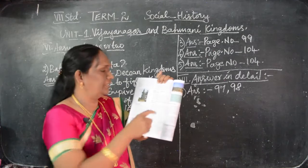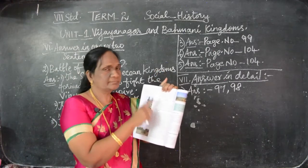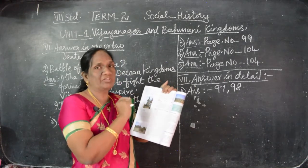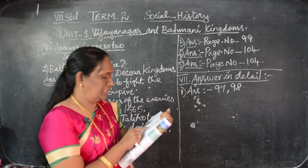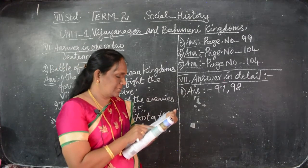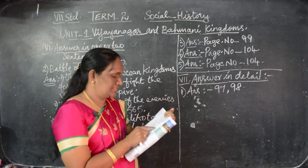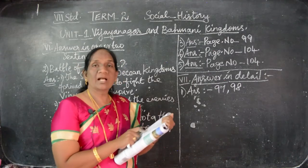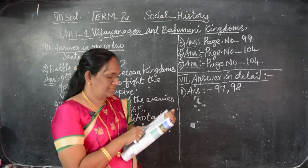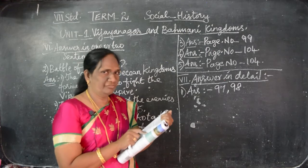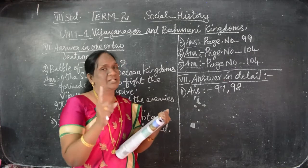Then the next side heading — Patron of Literature, Art and Architecture. You have to underline the side heading. Krishnadevaraya patronized art and literature. Eight eminent luminaries in literature, known as Ashtadiggajas, adorned his court. Till that you have to write. Can you follow? So this is the detailed answer — only one detailed answer.